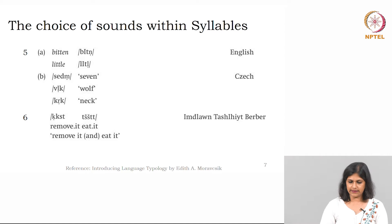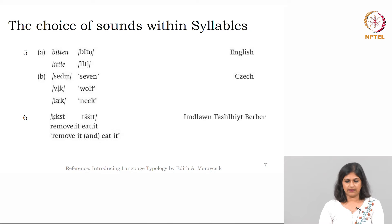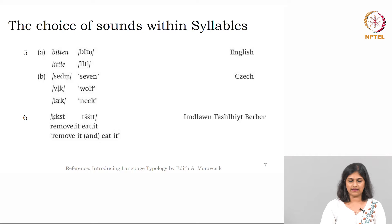Now let us look at how sounds are chosen within syllables. Within a given syllable, what sort of choices do we have as far as sounds are concerned? Let us take 'bitten' and 'little' in English. In Czech also you have words: 'seven', 'wolf', and 'neck'. In one language there appears to be an exception — looking at data number 6, you do not find any vocalic or syllabic sound. The concern is: does that mean the first generalization is nullified here?